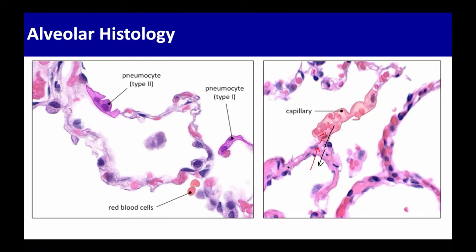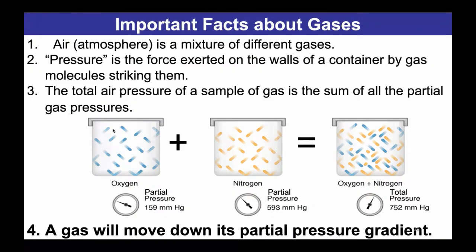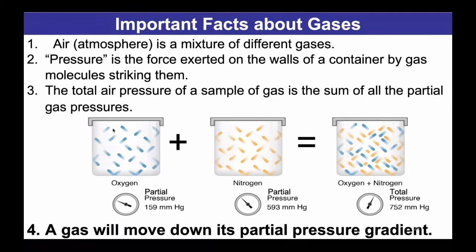This will be a little bit of a review, but most people haven't done this before they get to this class. This is the minimum you need to know about how gases behave in order to understand how the respiratory system functions. Air is a solution of different gases. Pressure is in a way related to concentration — it's the force exerted on the walls of a structure by molecules of gas or liquid bouncing against them. The fluid we're talking about with the respiratory system is atmosphere, but liquids do the same.